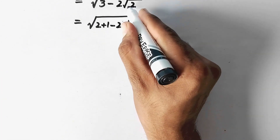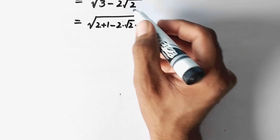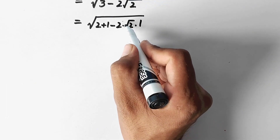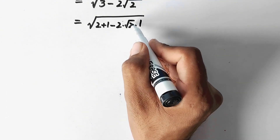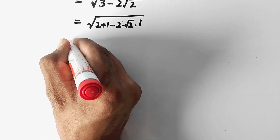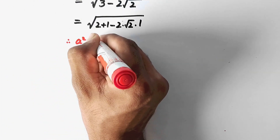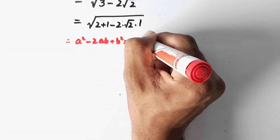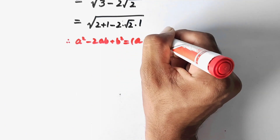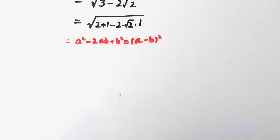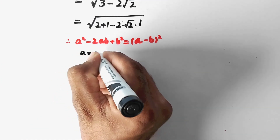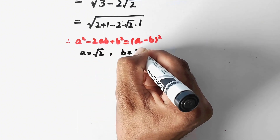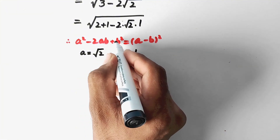We have multiplied this value by 1 as there is no effect on the value by multiplying by 1. We have written it in this form so we can apply an algebraic formula. As we know, a squared minus 2ab plus b squared is equal to (a minus b) whole squared, where a is equal to square root 2 and b is equal to 1.